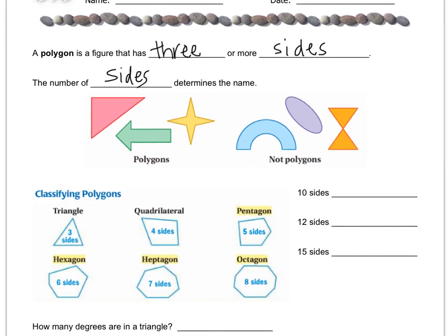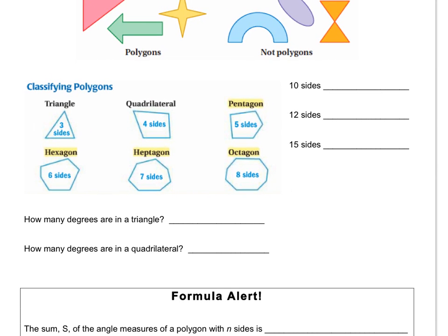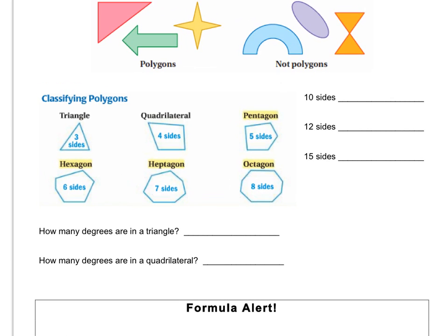There are other names — these are the common names that you might know: triangle, quadrilateral, pentagon, hexagon, heptagon, and octagon. Do you know the name of a ten-sided shape? It's a decagon. A twelve-sided shape is called a dodecagon.